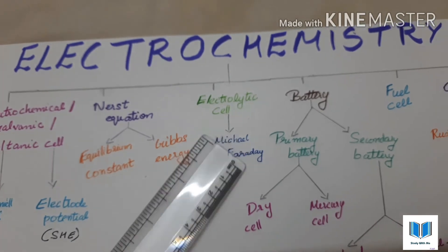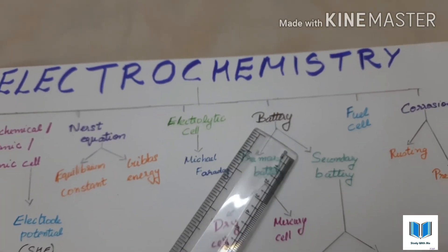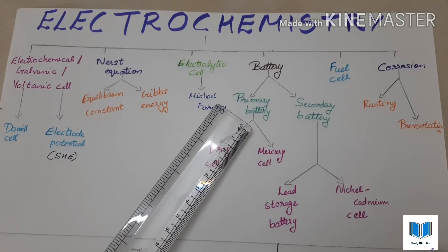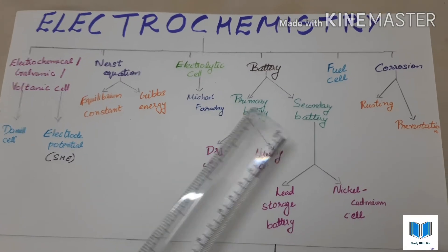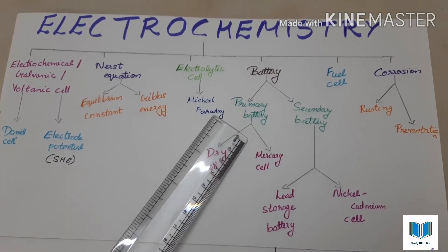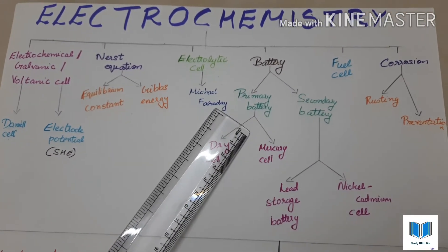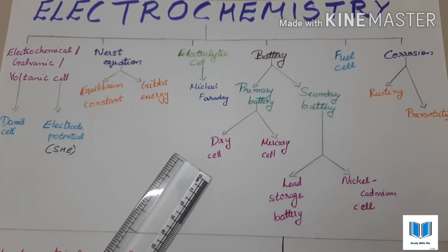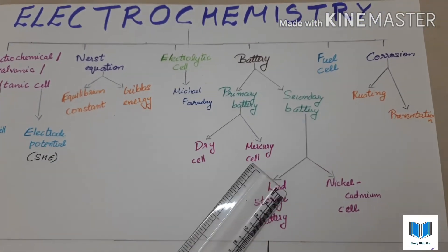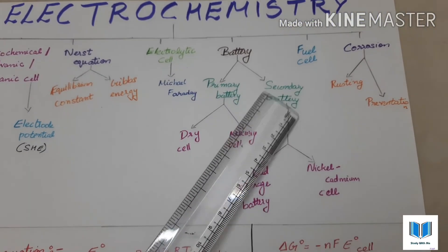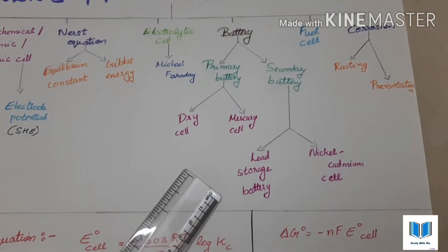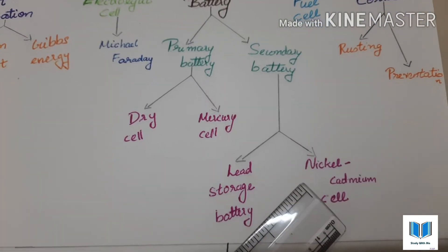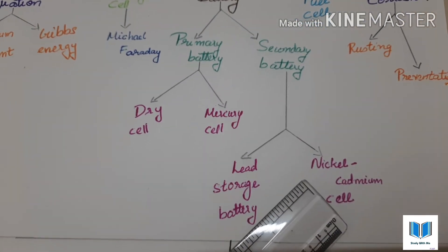Next comes battery, with two types: primary battery and secondary battery. Under primary battery we have dry cell and mercury cell. Under secondary battery we have lead storage battery and nickel-cadmium cell. Nickel-cadmium cell is not much important.